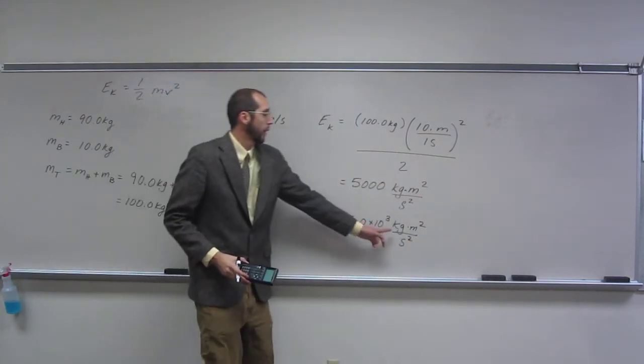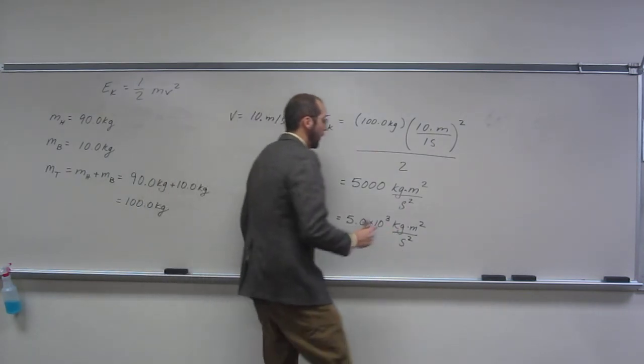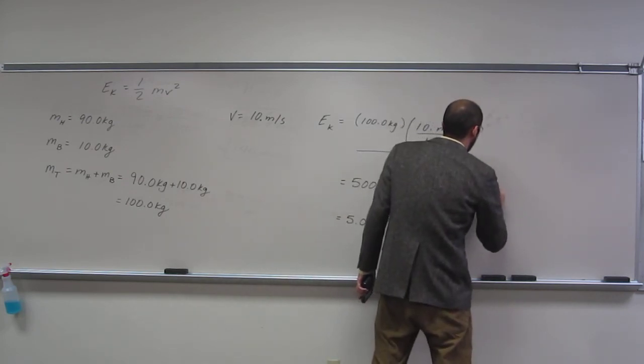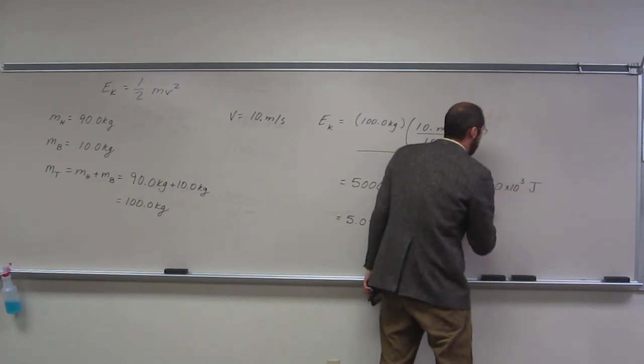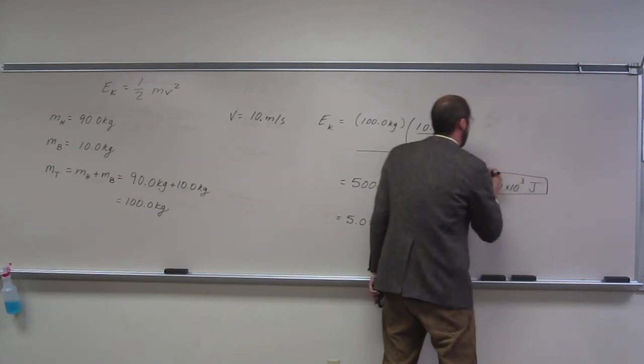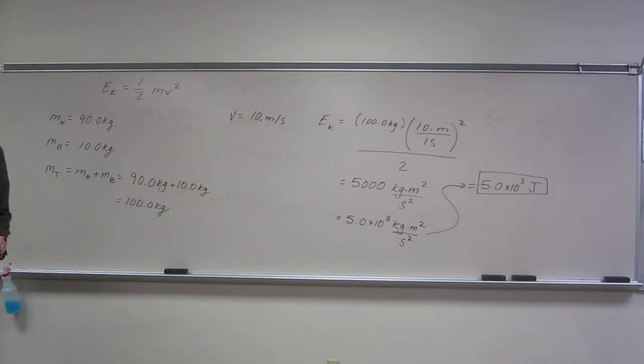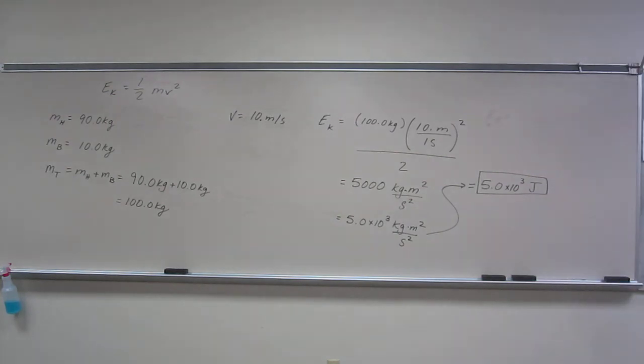And what did we say kilograms meters squared per second squared was? A joule. So the answer is going to be 5.0 times 10 cubed joules. Is everybody okay with that? Any questions on it? So when you get to that weird units of kilograms meters squared per second squared, I want you to remember joules. All right.